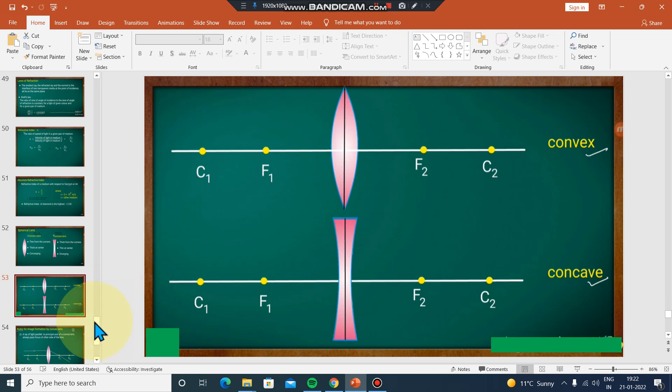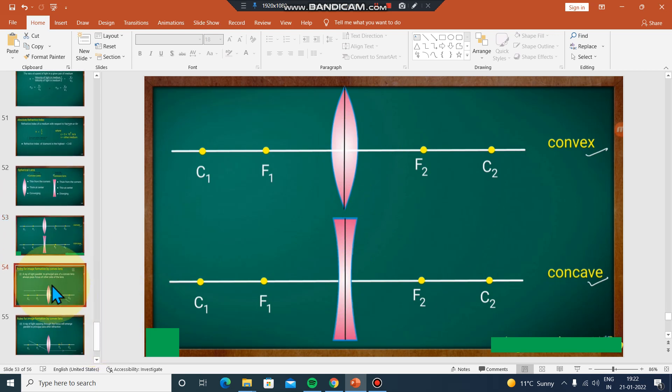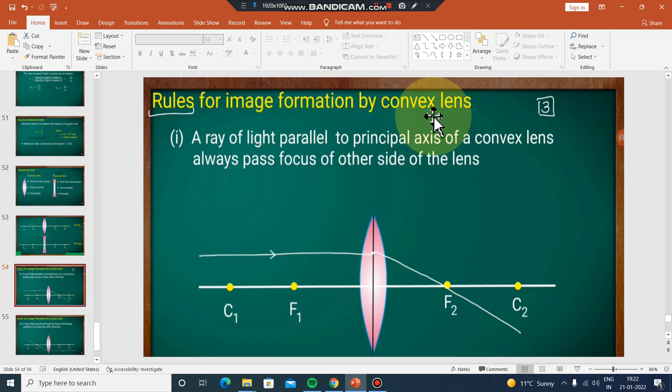Next, the rules for image formation by convex lens. First rule: a ray parallel to the principal axis will converge towards the focus point. In mirrors it reflects, but in lenses it refracts toward the focus. So parallel rays go to the focus point.